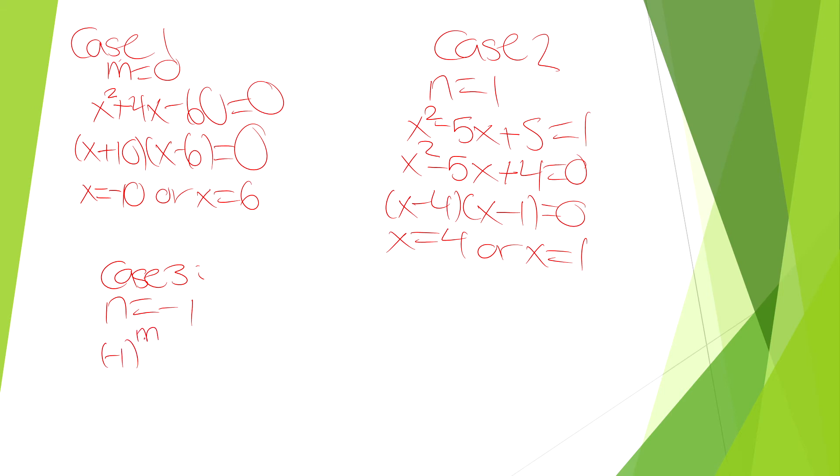If we raise negative one to the nth power, we know that it could either equal negative one or it could equal one. We know that it equals one when the power is an even number and negative one when it's an odd number.